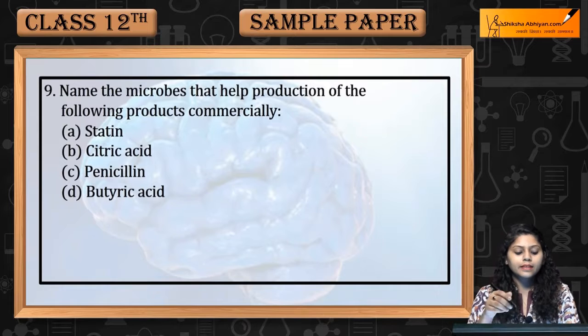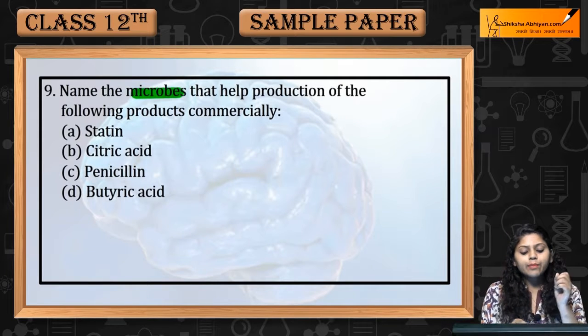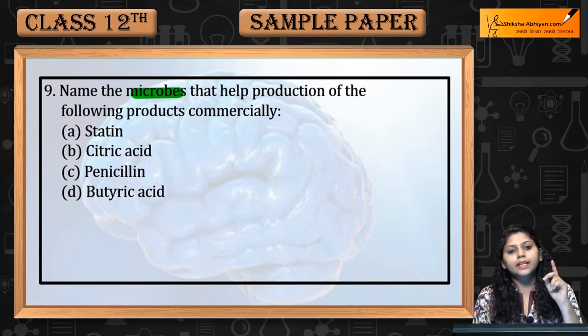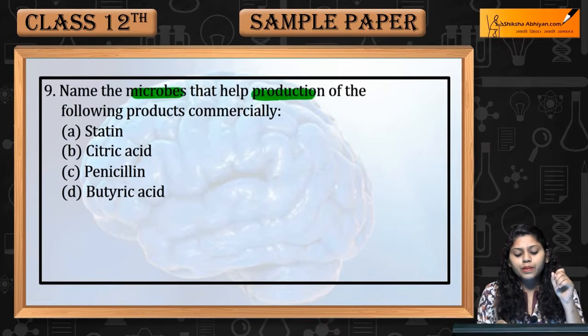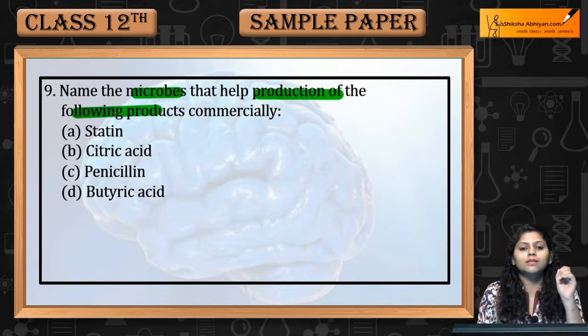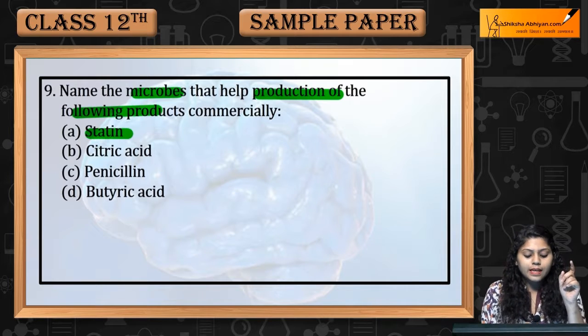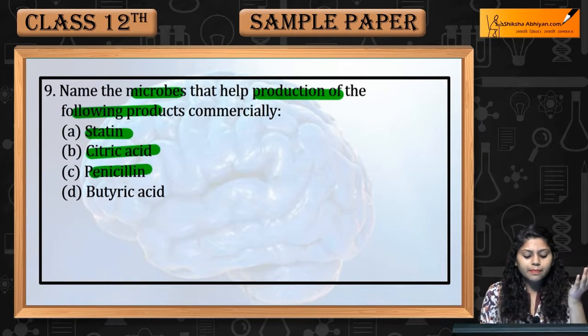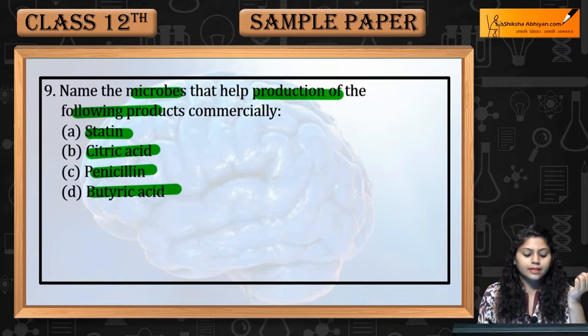Question 9: Name the microbes that help in the production of the following products commercially — Statin, citric acid, penicillin, butyric acid.